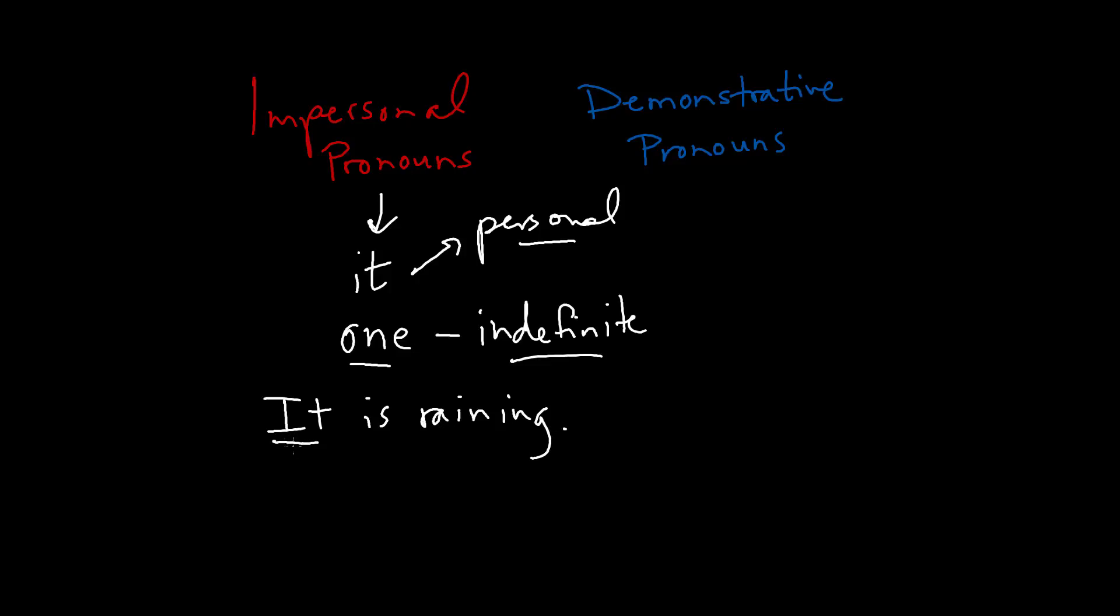Then what makes it impersonal here is that it's not referring to anything specific. It's not referring to a particular person or thing. It's not referring back to a noun. So this it lacks an antecedent. So we could say no antecedent. And if you remember from the video on personal pronouns, the antecedent is the noun that comes before the pronoun, and that the pronoun refers back to. So when it lacks an antecedent, then it can be considered an impersonal pronoun. And when it does have an antecedent, then it's considered a personal pronoun.